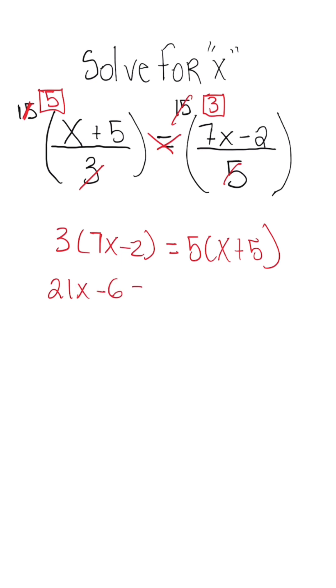21x minus 6 is equal to 5x plus 25. Now when we simplify this and we subtract 5 on both sides, what we're going to have is 16x minus 6 is equal to 25.